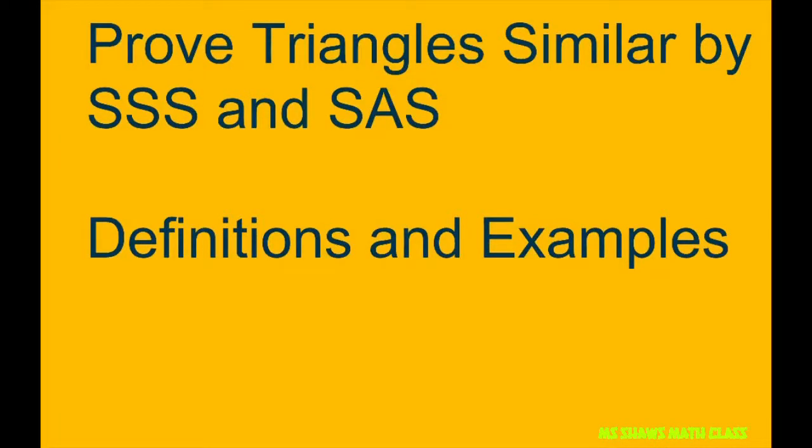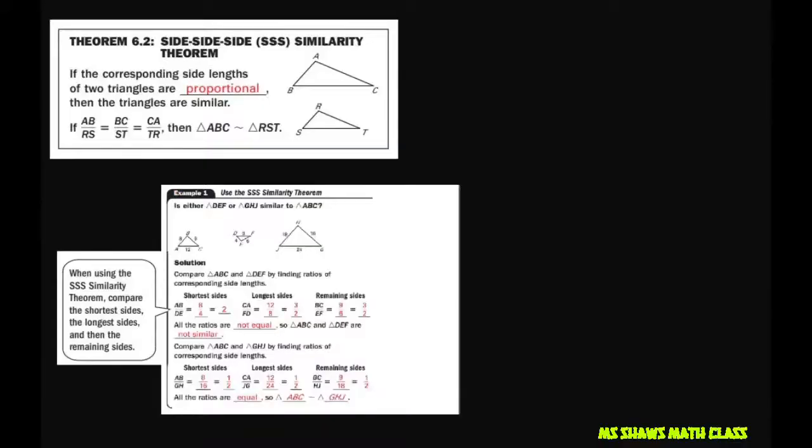Hey everyone, we're going to prove triangles similar by the Side-Side-Side and Side-Angle-Side similarity theorems. The first theorem, the Side-Side-Side similarity theorem, states if the corresponding side lengths of two triangles are proportional, then the triangles are similar.